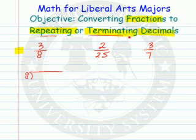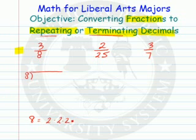How do I know the difference? Well, there's a little trick if you want to find out if it's going to repeat or terminate. Look at the denominator. If the factors of that are twos and/or fives only, when the fraction is in simplest form, then it's going to terminate.